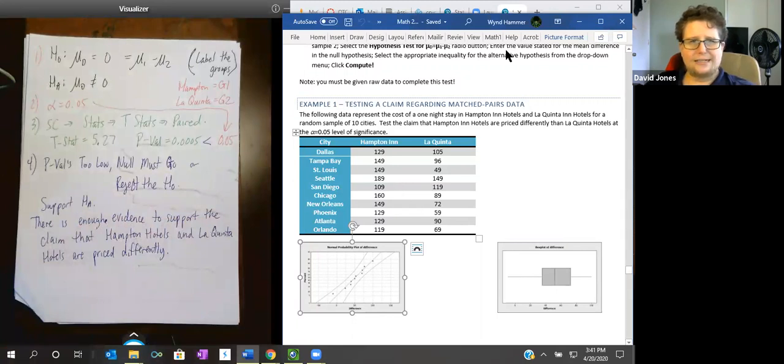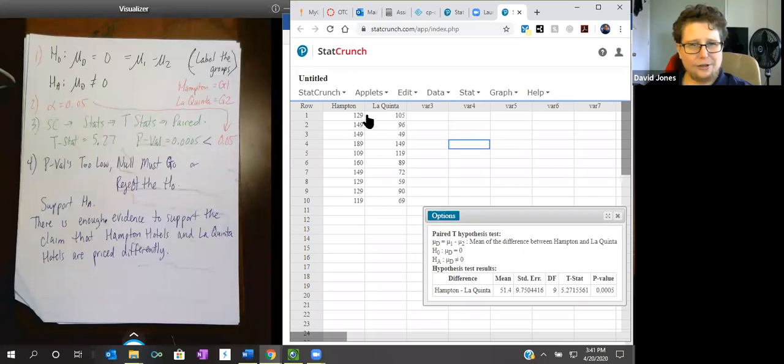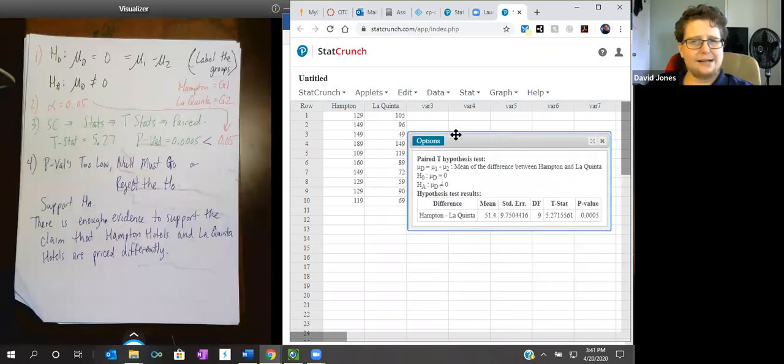So what is HA in words? The null hypothesis is that the difference was zero. If the difference is zero, it means that they're priced the same. So the alternate hypothesis is they are priced differently. There is enough evidence to support the claim that Hampton hotels and La Quinta hotels are priced differently.